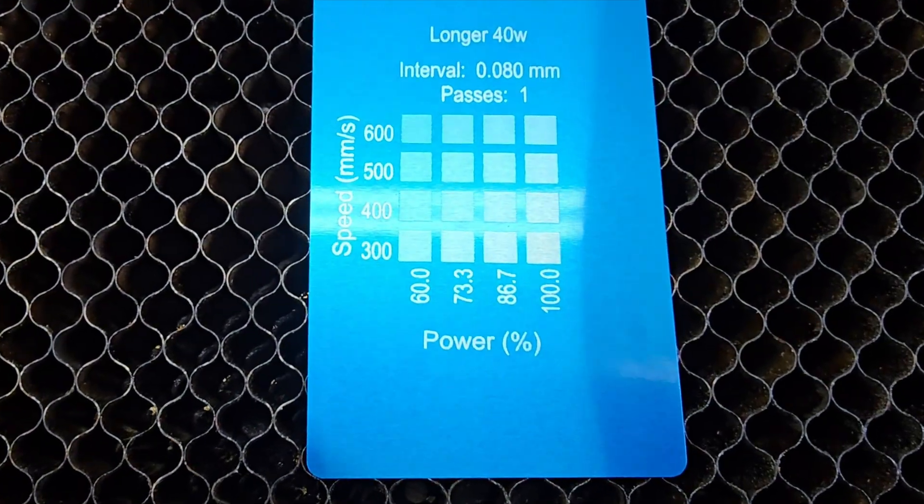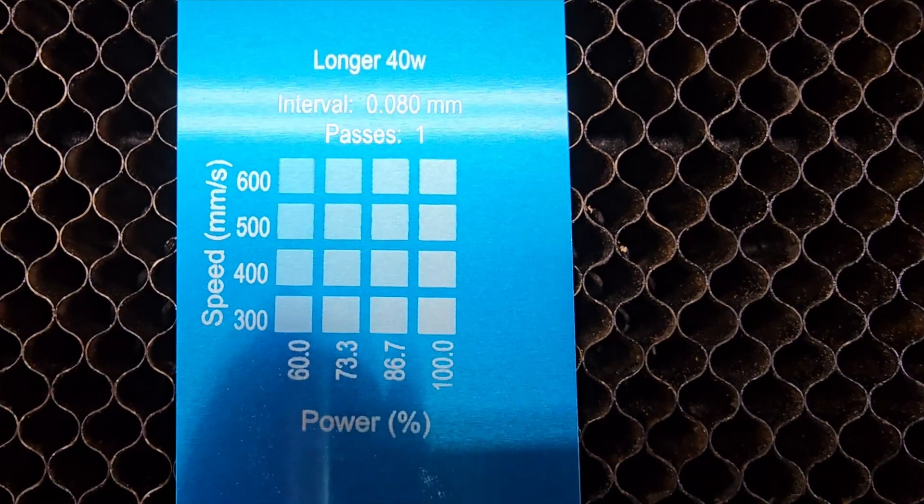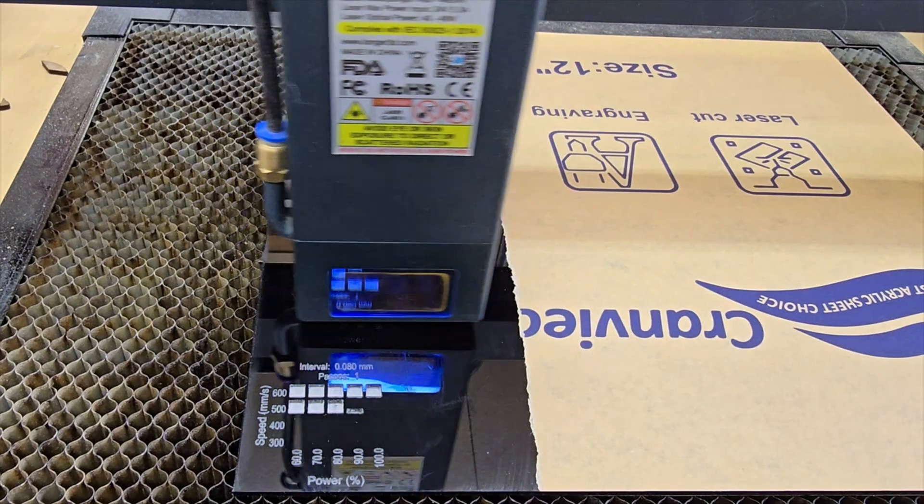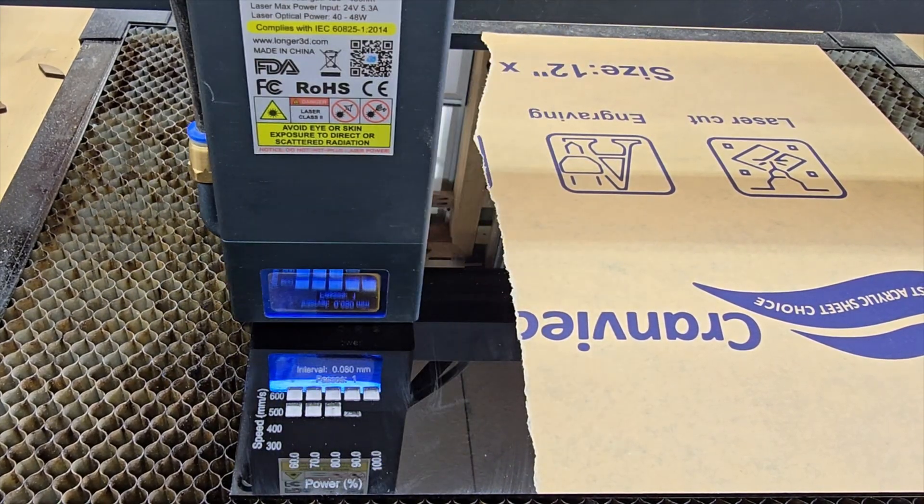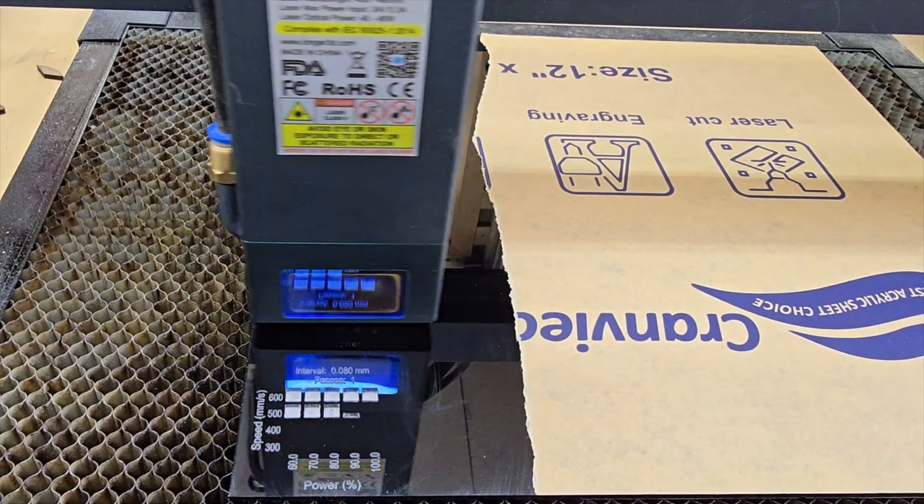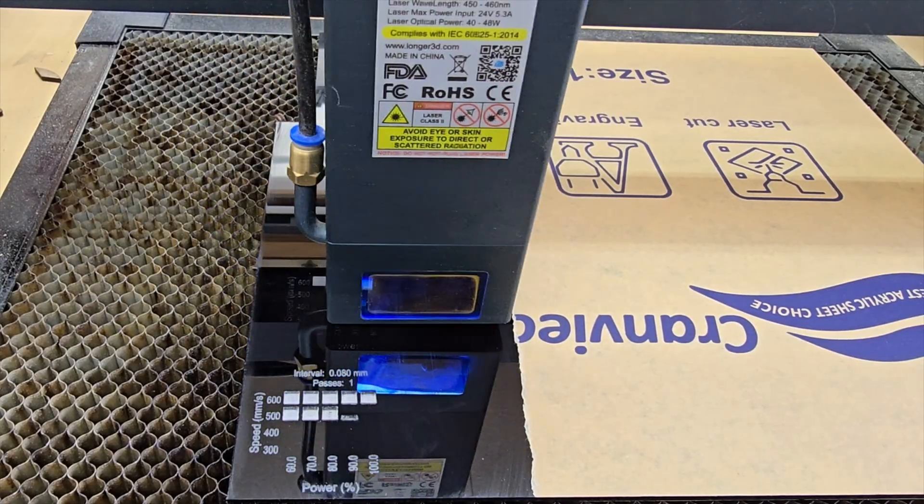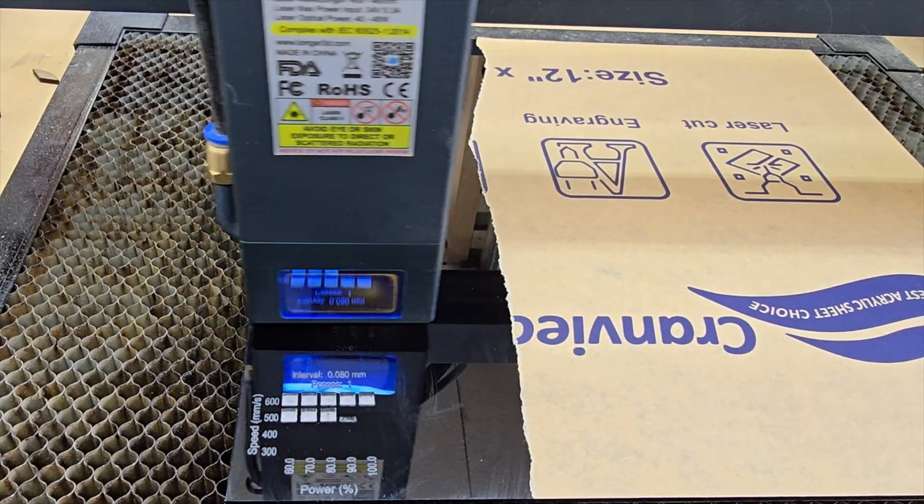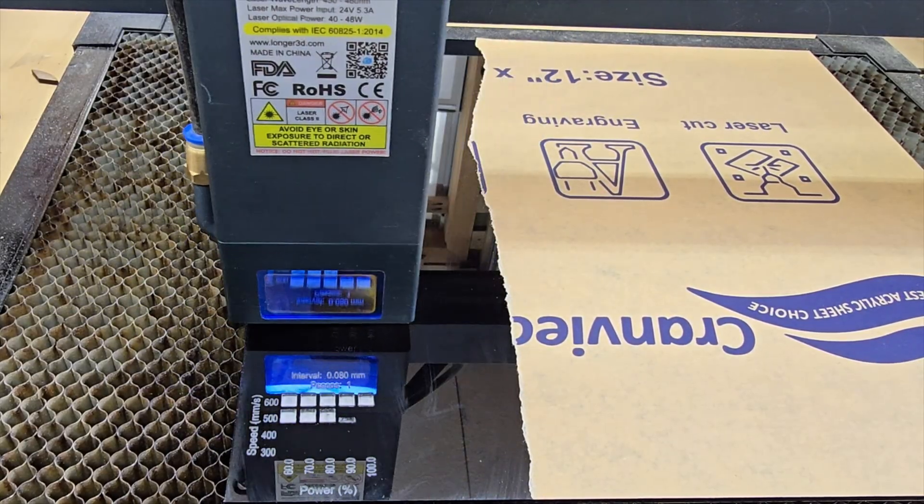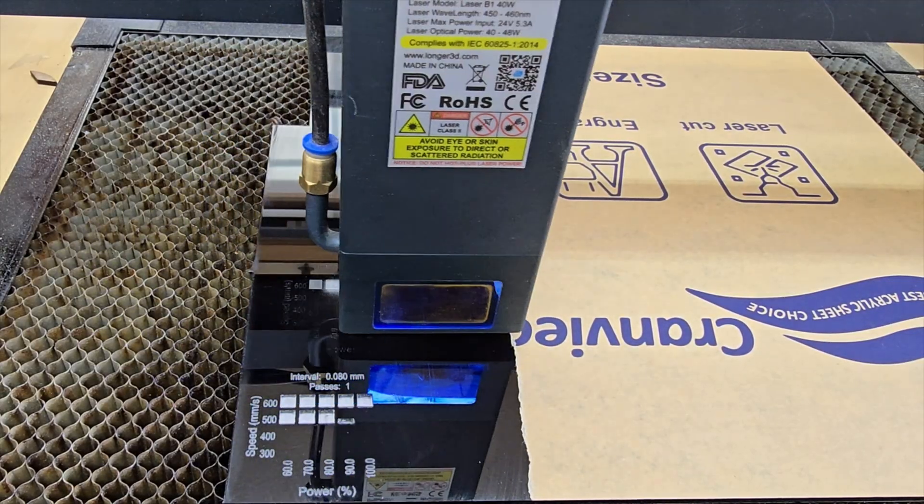I did some anodized aluminum here, and I went from 300 to 600, and at 600 millimeters a second, this thing is still just putting out great engraves at full speed there. I did some acrylic, and I started down at the bottom doing the same thing, 60 to 100, and even at 600 millimeters a second, this thing was cutting in almost a millimeter thick or deep, so I actually changed it from 10 to 50 and re-ran it. Even at the 10% there at 600, this thing is putting out a great engrave.